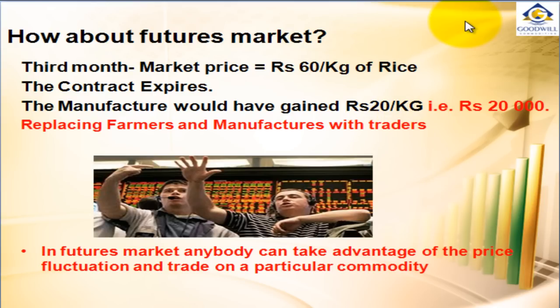Now, if you replace both the manufacturers and farmers with a trader — in the earlier example we saw actual buyers and sellers participate — but if they have no intention to take physical delivery of the underlying asset, which in the previous example was rice, but want to make use of price variation to make profit, then they are called traders who are speculating on the price of rice. In the futures market, anybody as a trader can take advantage of price fluctuation and trade on a particular commodity.